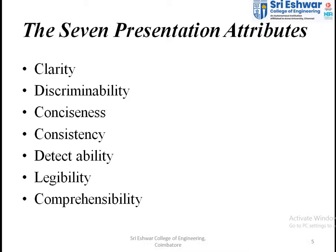The fifth attribute is detectability — it directs users toward the required information. For example, when performing a transaction, there is a clear direction: log in, choose an option, select transaction type (within or between banks), and enter a PIN. This step-by-step direction is known as detectability. The sixth attribute is legibility — information should be easy to read, using simple words without difficult jargon that could confuse users.